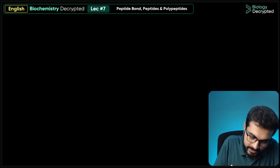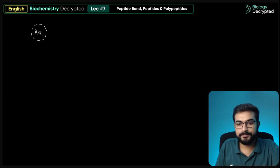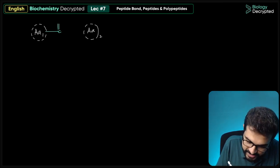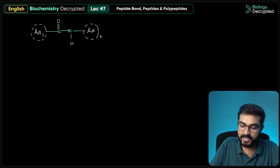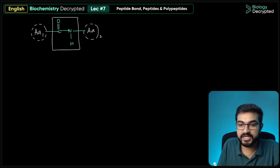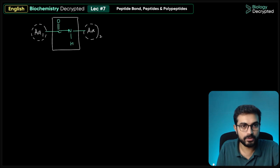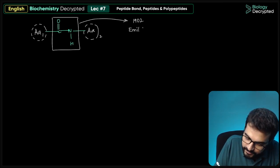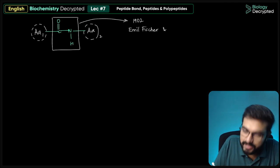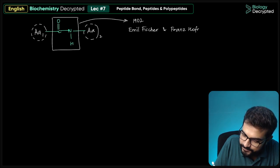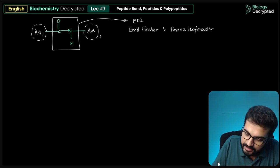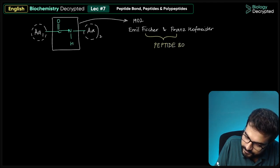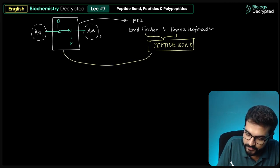So, amino acid one is joined to amino acid two via a C(=O)-NH bond — that is the peptide bond. In the year 1902, Emil Fischer and Franz Hoffmeister characterized this peptide bond. This is the bond that links amino acids together in peptides and proteins.